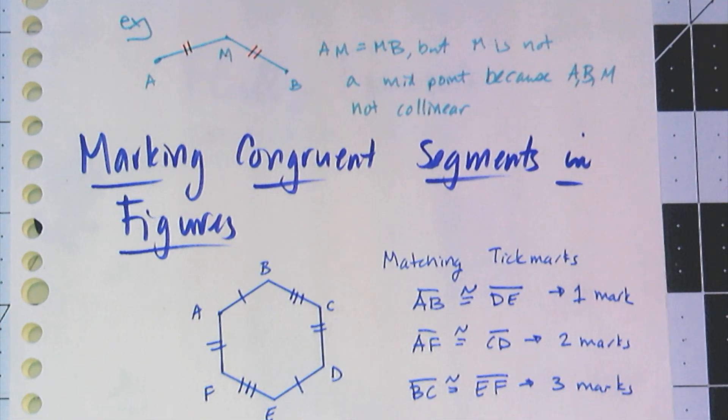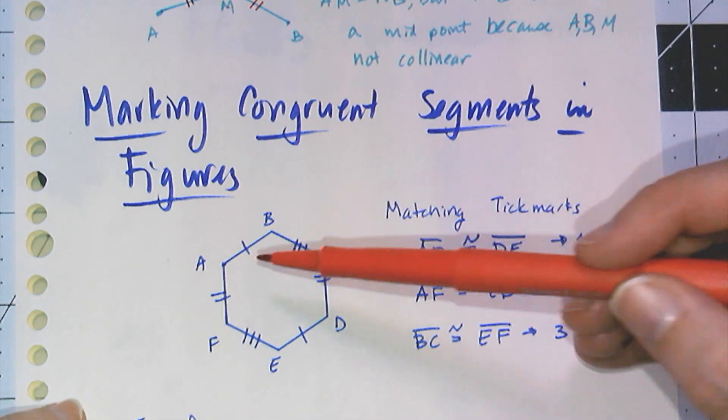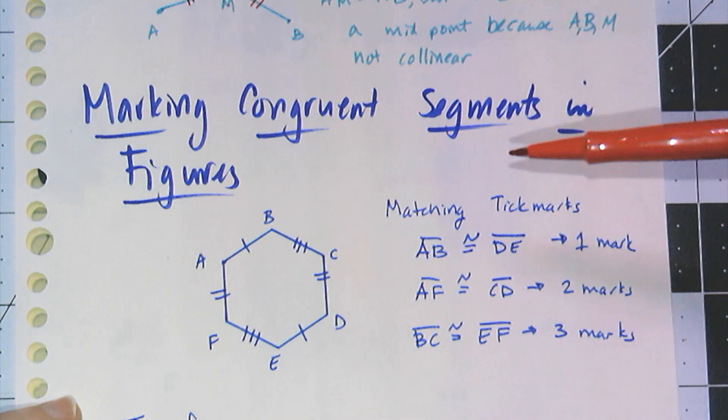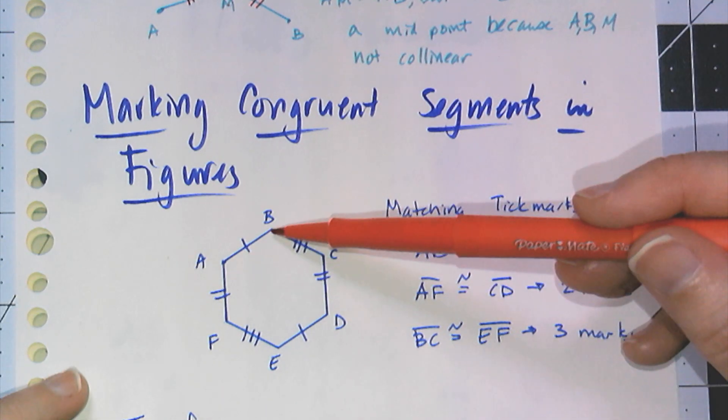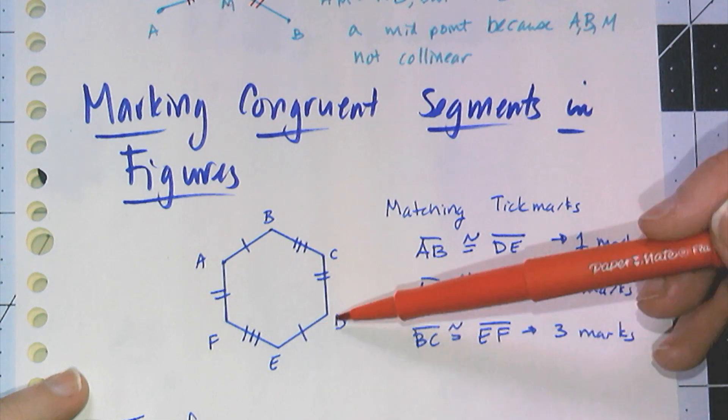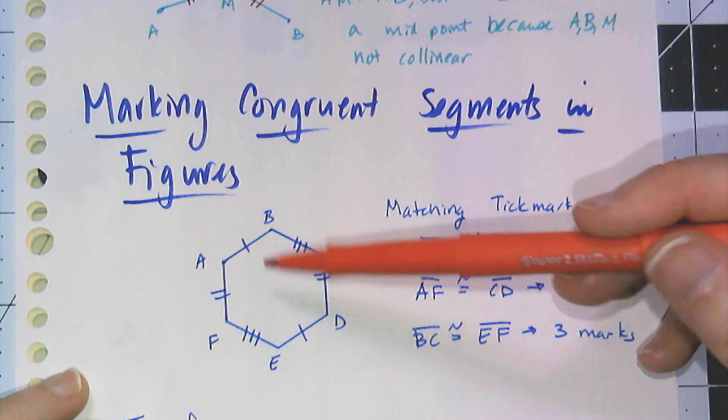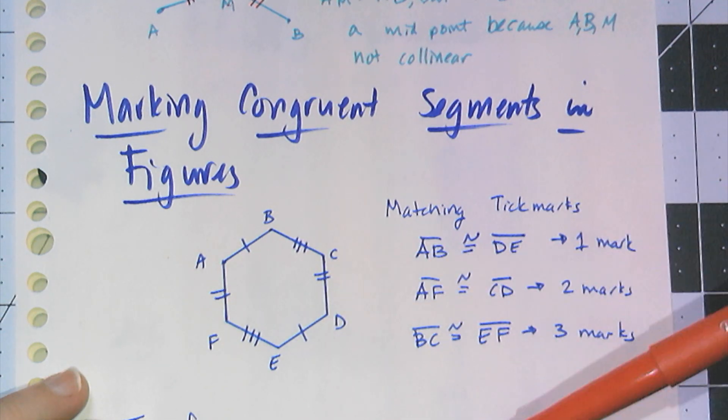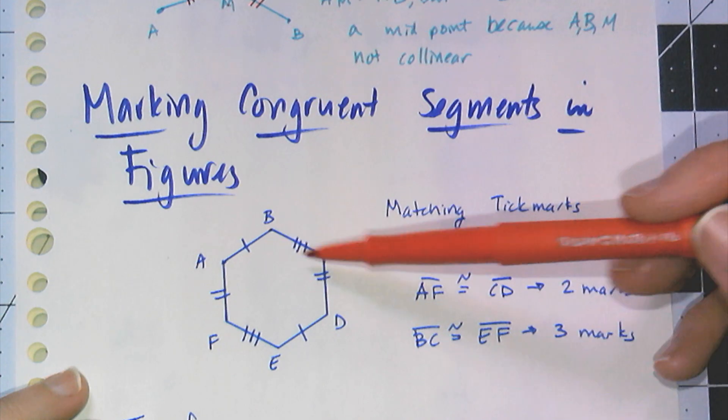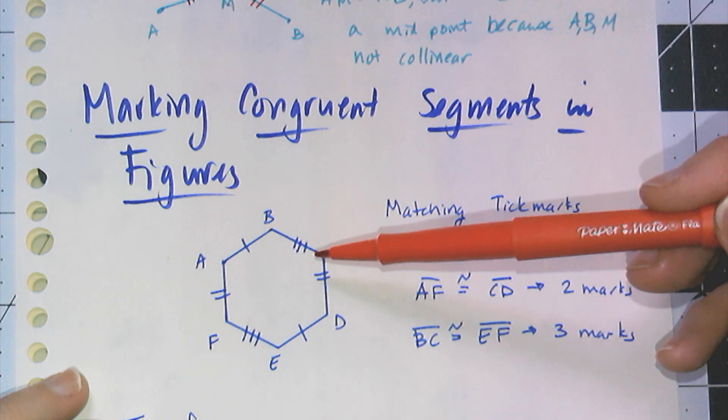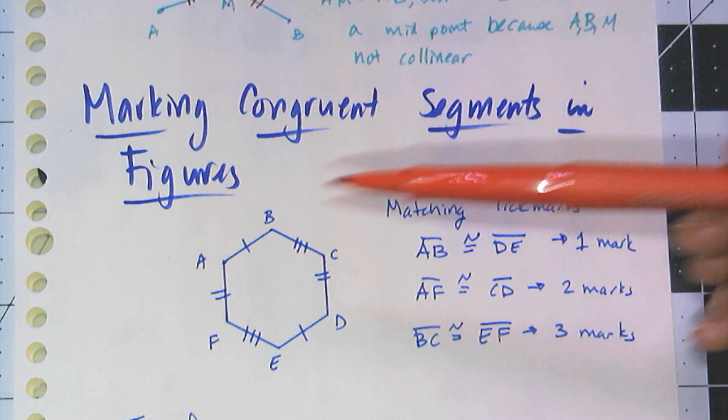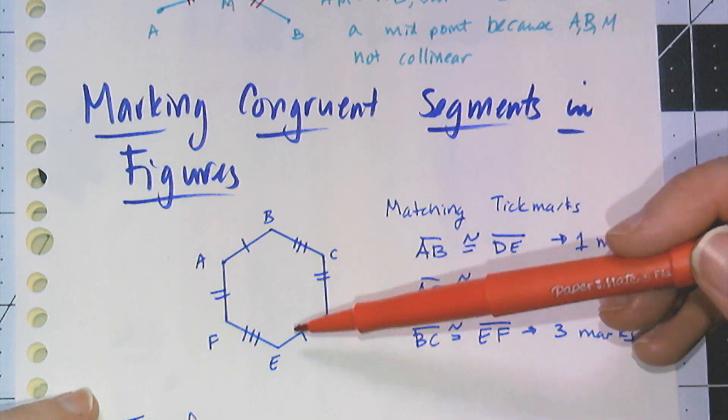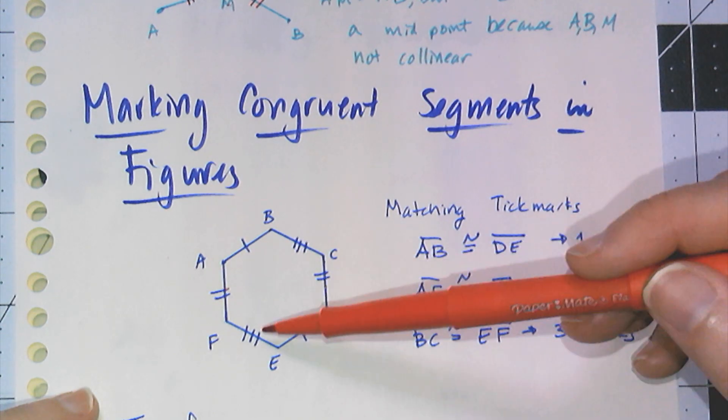Like this hexagon here, I have one set of tick marks, two sets of tick marks, and three sets of tick marks. They mean that line segment AB and line segment DE are congruent because they both have one tick mark. AF and CD are congruent because they both have two tick marks. FE and BC are congruent because they each have three tick marks. I have no idea how AB relates to BC or CD. All I know is that this is congruent to that, that is congruent to that, and that is congruent to that.